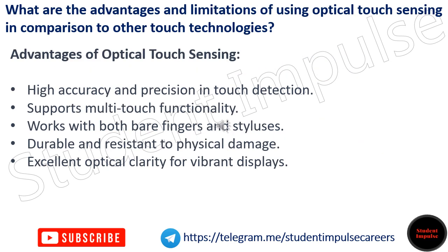What are the advantages and limitations of using optical touch sensing in comparison to other touch technologies? Advantages of optical touch sensing include: high accuracy and precision in touch detection, support for multi-touch functionality, compatibility with both bare fingers and styluses, durability and resistance to physical damage, and excellent optical clarity for vibrant displays.